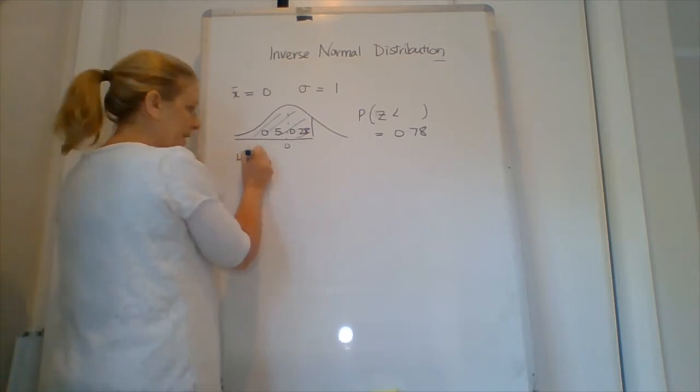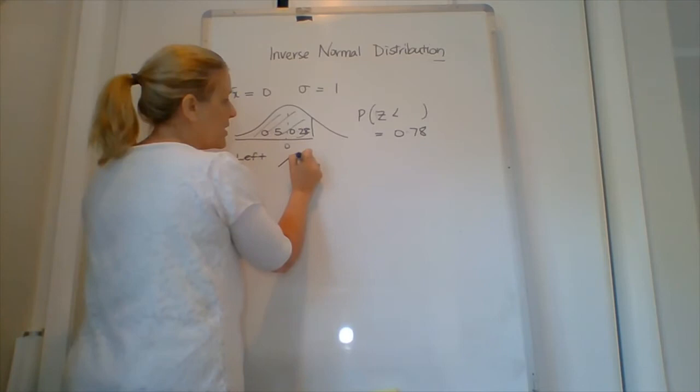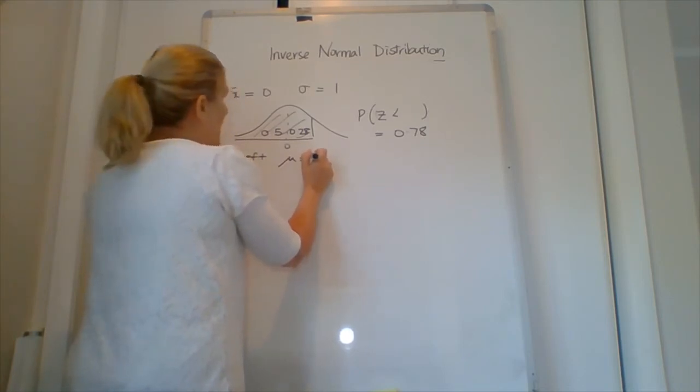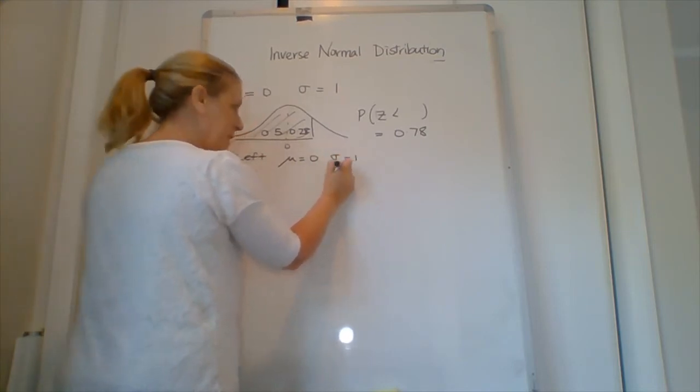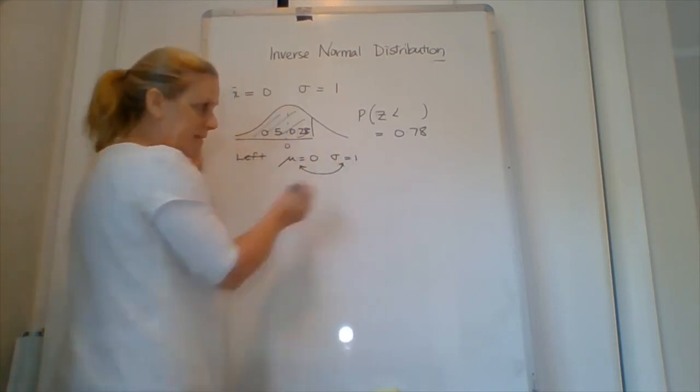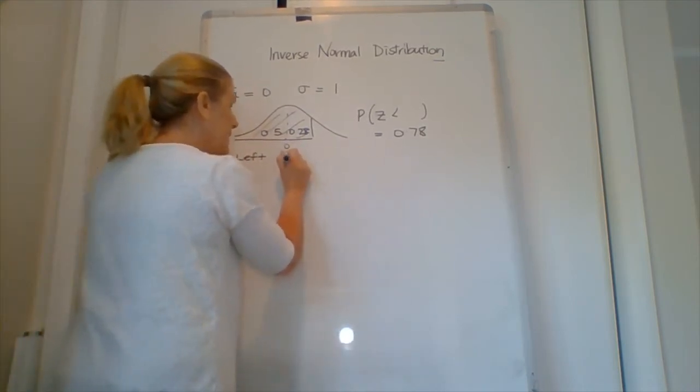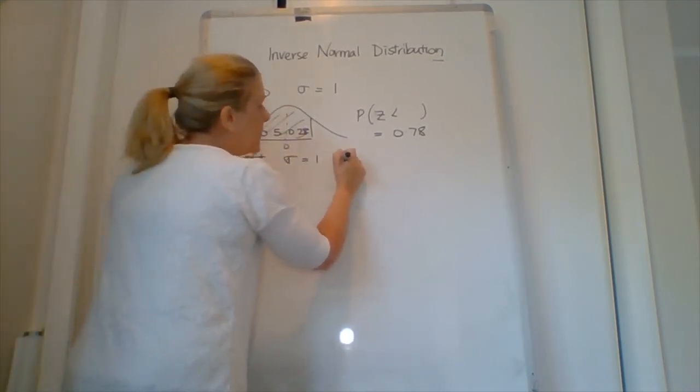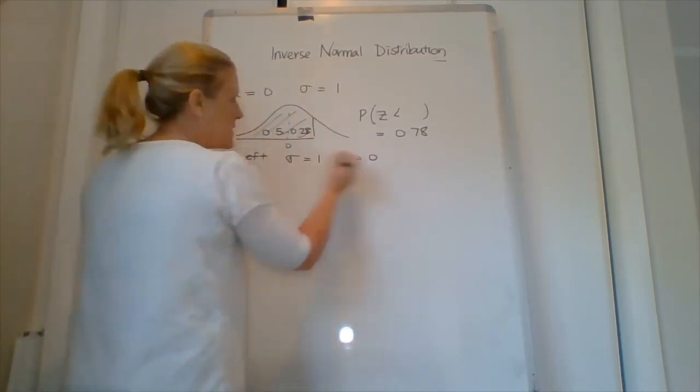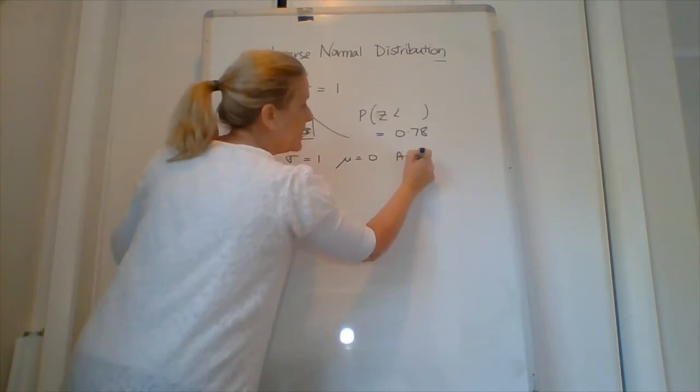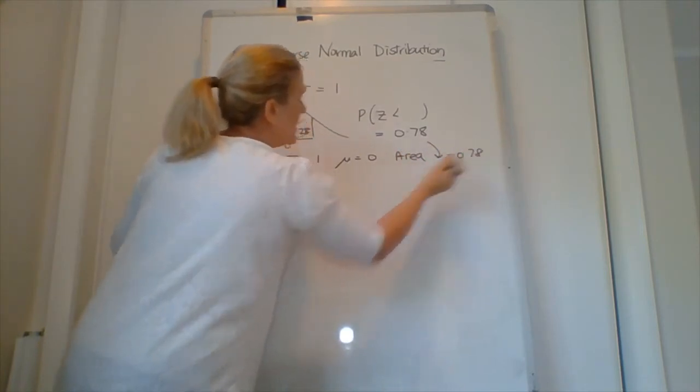Because what we're going to do is we're going to put it in our calculator looking like that. So we're going to make sure that we've got a left tail. We're going to make sure that we put in the standard deviation equals zero, that's the mean, and the standard deviation equals 1. Remember, they go the other way around. We put the standard deviation in first. Well, let's write it the other way around. Standard deviation equals 1, mean equals 0. And then it says area. So area is the one that we need to put this in for. 0.78. Let's go.